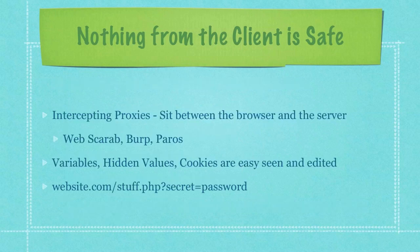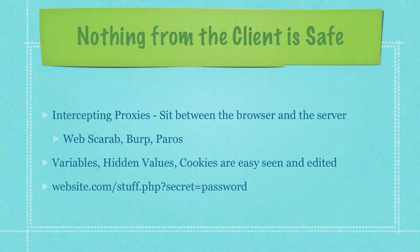Hackers also like to use something called an intercepting proxy. These sit between the browser and the server — so you have the client, then the intercepting proxy, then the server. It sits between the client and grabs all information before it gets to the server, and also grabs information from the server before it gets to the client. Programs such as Webscarab, Burp, and Paros are used as intercepting proxies and they're extremely easy to set up.